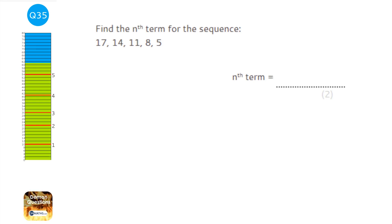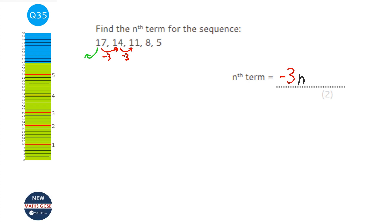To find the nth term, first work out the common difference — it's going down by 3 each time, so the difference is −3. This goes before n: −3n. Next, find the zeroth term by going one step back from the first term: 17 + 3 = 20. Add that to get −3n + 20. Check: n=1 gives −3+20=17 ✓; n=5 gives −15+20=5 ✓.